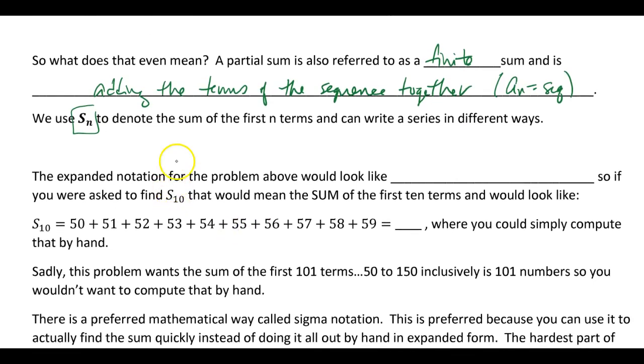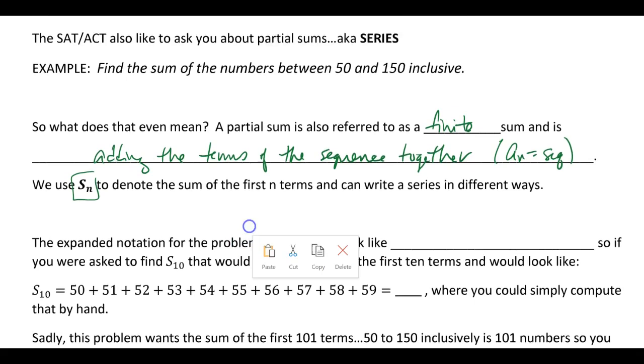So the expanded notation for the problem above would basically look like where you actually did this by hand, like 50 plus 51 plus 52 all the way to 150. So that is expanded notation, which is insane. But if you were asked to find S sub 10, this is the notation you need to be on the lookout for. That would just mean to find the first 10 terms, and you would actually just punch them all in and add them all up and get a nice pretty number there.